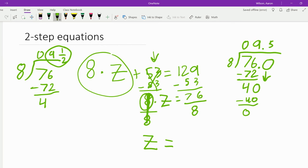Now all we have to do is just bring the fraction one down. 9 and 1 half. Z equals 9 and 1 half.